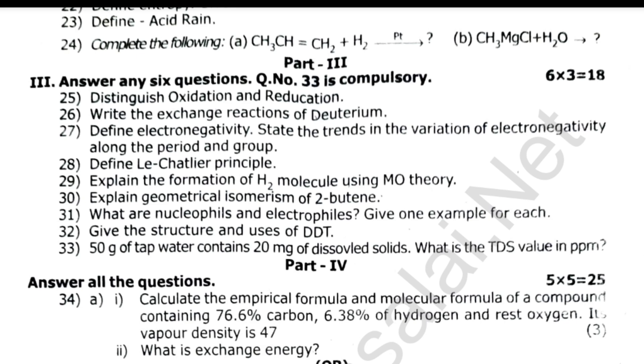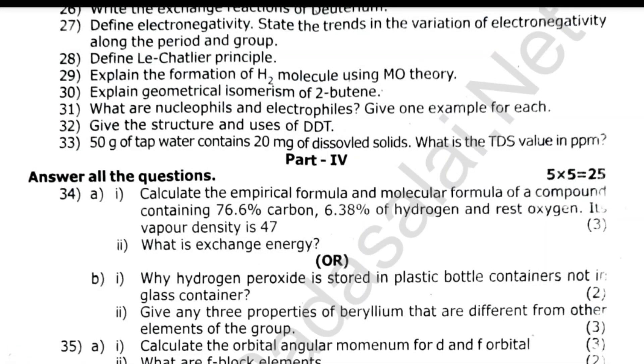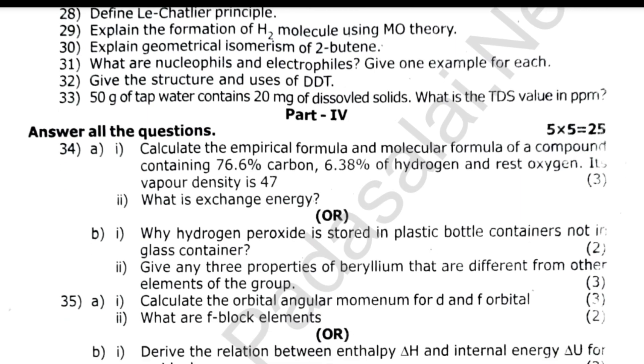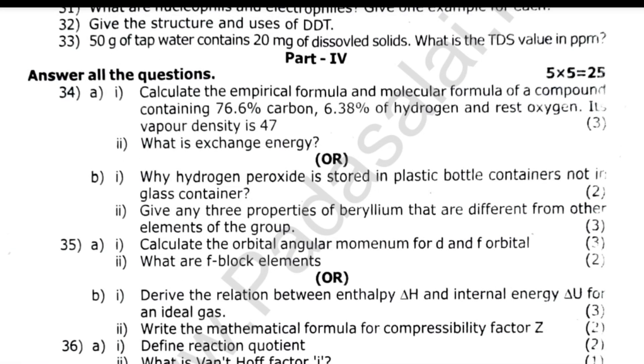Why is hydrogen peroxide stored in plastic bottles and not in glass containers? Give any three properties of beryllium that are different from other elements of the group. Calculate the orbital angular momentum for d and f orbitals. Derive the relation between enthalpy delta H and internal energy delta U for an ideal gas. Write the mathematical formula for compressibility factor Z. Define reaction quotient.